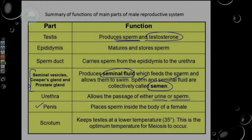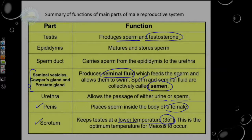The penis is the organ used to introduce sperm into the female's body for the purpose of reproduction — making a new organism of the same species. The scrotum hangs outside of the body; the reason for this is to maintain a lower temperature than inside the body, to keep the sperm at an optimum temperature for meiosis to occur. Meiosis is the process where those male gametes are created.